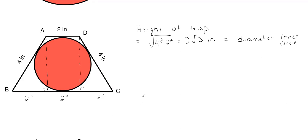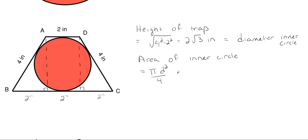Now that I have the diameter of my inner circle, I can find the area using the formula: area equals pi times d squared over four. So that's pi times (2√3)² over four, which gives me an area of three pi inches squared for the inner circle.